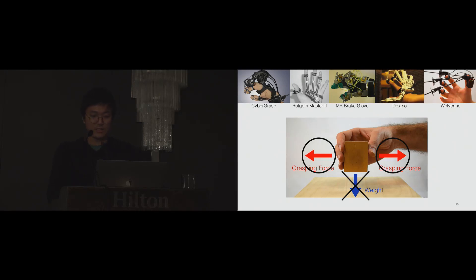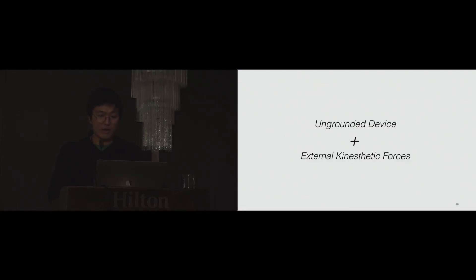This is not desirable because first, it is not realistic, and second, users don't know when they lift the object, so it is bad for manipulation. An ideal haptic device for commercial VR would be an ungrounded haptic device with the capability of rendering external kinesthetic forces. Our goal in this paper is building an ungrounded haptic device for grasping with the sensation of weight.